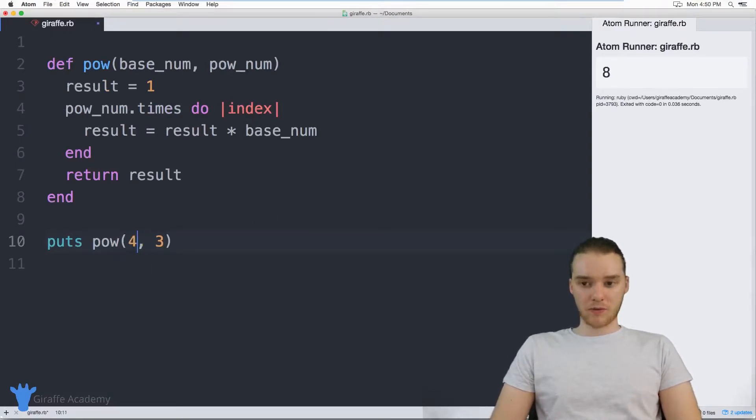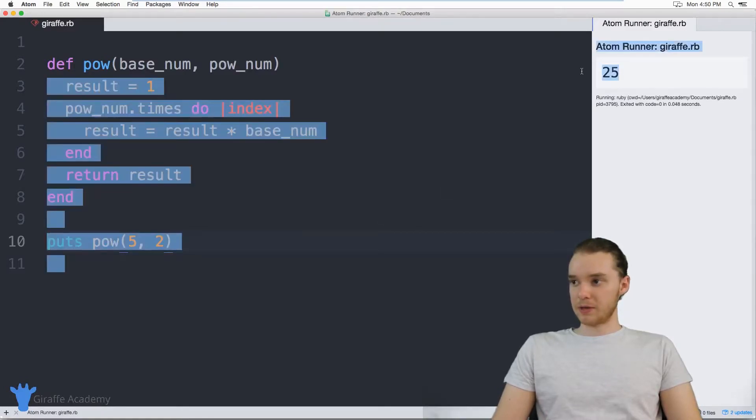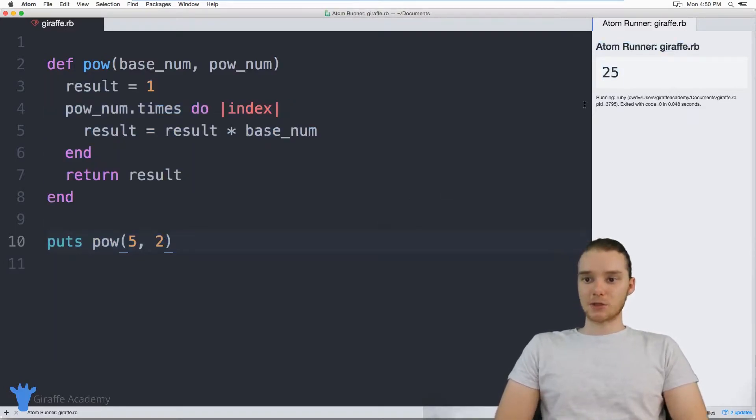Let's try another one. Why don't we do four cubed. So now we should get 64. Good. Let's do five squared. So we should get 25. And we do, so looks like this method's working.